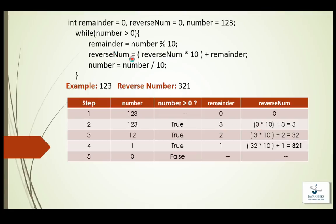Then reverse number equals reverse number multiplied by 10. Reverse number is initialized as 0, so 0 multiplied by 10 plus remainder — remainder is 3 — so reverse number becomes 3. In the third step, number equals number divided by 10, so 123 divided by 10 becomes 12.